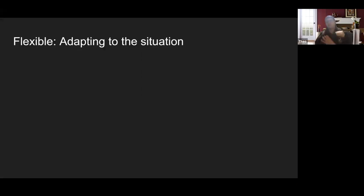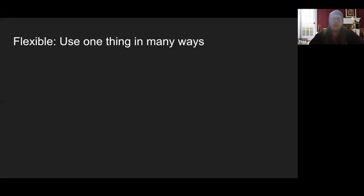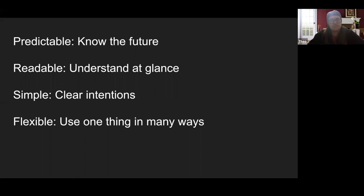So flexible means adapting to the situation and using one thing in many ways. Here are the four principles of modern JavaScript: Predictable — knowing the future. Readable — understanding at a glance. Simple — having clear intentions. Flexible — using one thing in many ways.